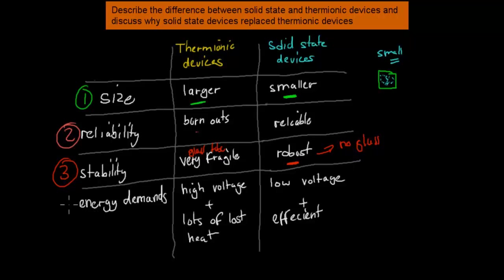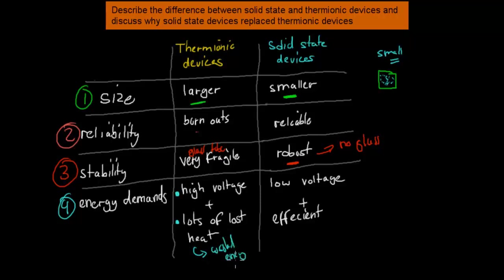Also quite important are the energy demands. For thermionic devices, we have to use a high voltage to get current to flow through the circuit, and there's also lots of heat being lost, which means wasted energy — so it's not as efficient and has high voltage requirements. Whereas solid state devices have low voltage requirements and are quite efficient. So those are two more reasons why solid state devices replaced thermionic devices, and these four were the main ones you should know.